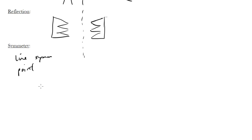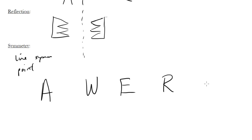The best example is to look at some letters: A, W, E, R, and X. A has line symmetry right down the middle, because you've got the same thing on both sides. If I reflected the left side over this line, you would just get the right side. But that's it — there's no other symmetry. Same thing with W: there's one line of symmetry right down the middle, but that's about it.